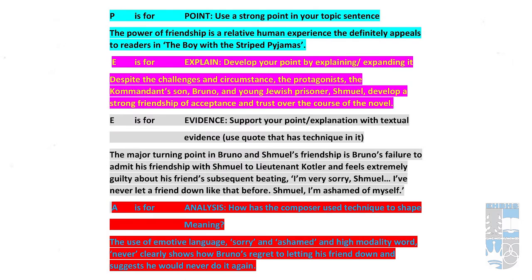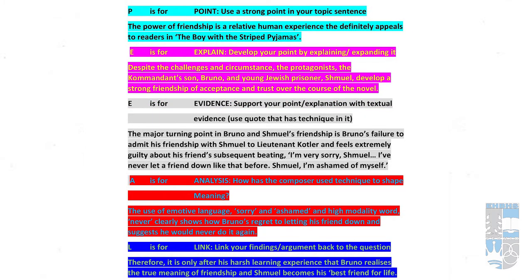We have a great quote, so let's analyse it. The use of emotive language — 'sorry' and 'ashamed' — and the high modality word 'never' clearly shows Bruno's regret at letting his friend down and suggests he will never do it again. You can sense the regret and shame in his voice as he pleads with Shmuel for forgiveness. Why did Boyne use emotive words? To capture Bruno's emotional response of regret and remorse. Notice we used the word 'clearly' to show our argument. So we have made our point, explained it, used evidence, and analysed it.